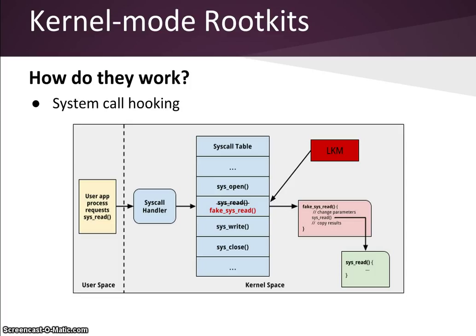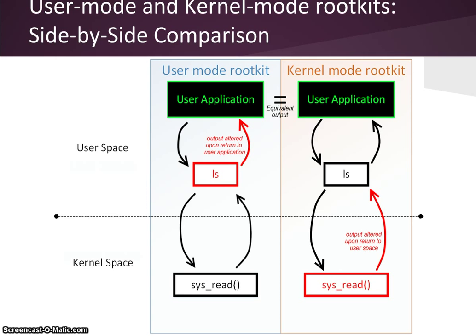This illustrates the difference of how a user mode rootkit and a kernel mode rootkit alter output to the user. Both outputs will be the same, but they are achieved in different ways. User mode rootkits replace the binary file of a command and the output is modified in user space. Kernel mode rootkits alter output to the user by modifying system calls. This modification is performed in the kernel space and thus is harder to detect.